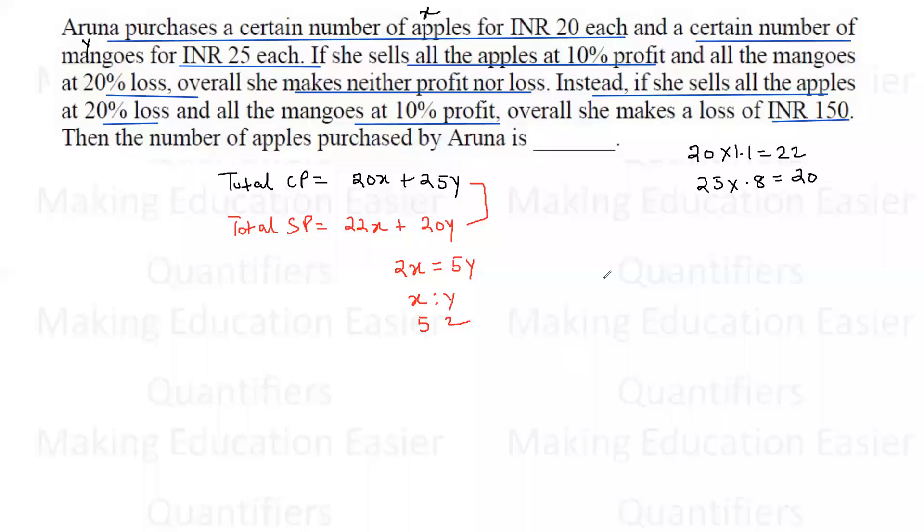Now let's see in this case the total selling price. She's selling apples at 20% loss, so she'll sell each apple for 16 rupees. So 16X.